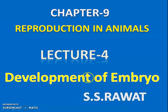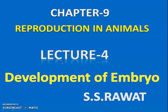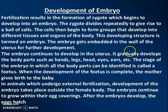Good morning students. This is chapter number 9, Reproduction in Animals, lecture number 4. Today's topic is development of the embryo. Fertilization results in the formation of a zygote, which begins to develop into the embryo.